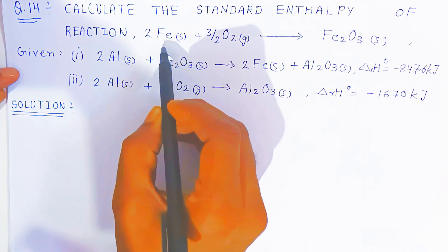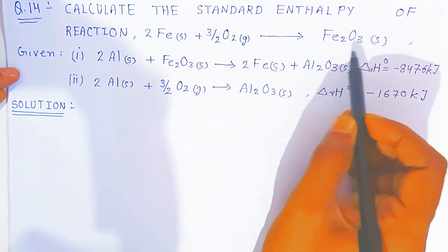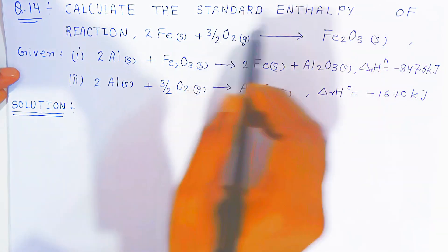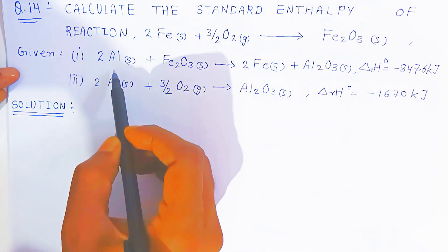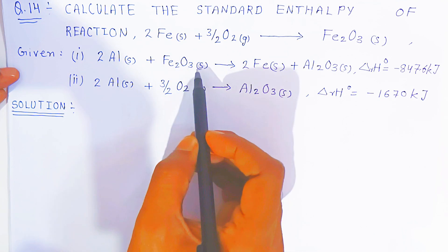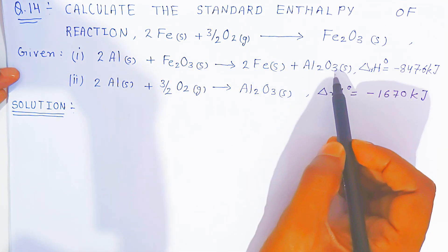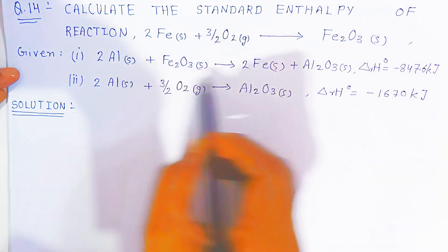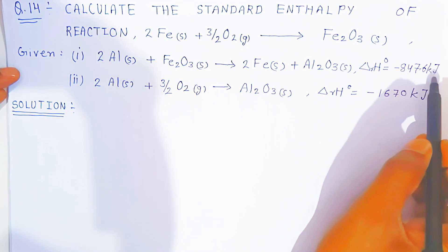This is the reaction where iron reacts with oxygen to give iron oxide. During this reaction, what will be the standard enthalpy of the reaction? What is given: when aluminium solid reacts with iron oxide, it gives iron and aluminium oxide. The standard enthalpy of this reaction is given as minus 847.6 kilojoules.